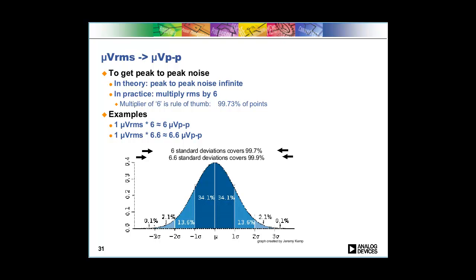So we talked a lot about how to convert spectral density, nanovolts per root hertz, into microvolts RMS. The next thing we're going to talk about is how to convert microvolts RMS into microvolts peak-to-peak.